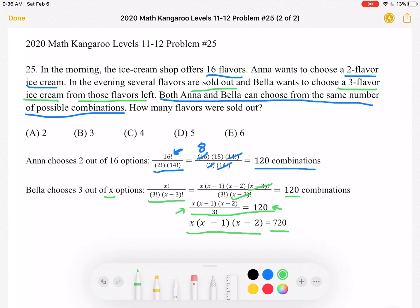So now we have this number 720, and we see that it's equal to the product of three consecutive numbers. We have X, X minus 1, X minus 2.